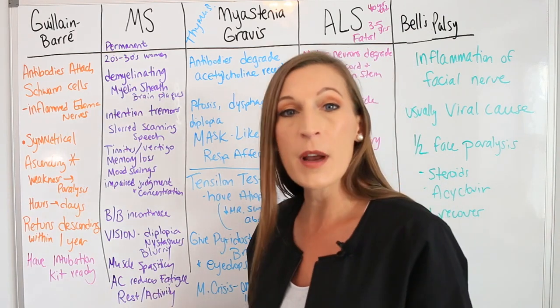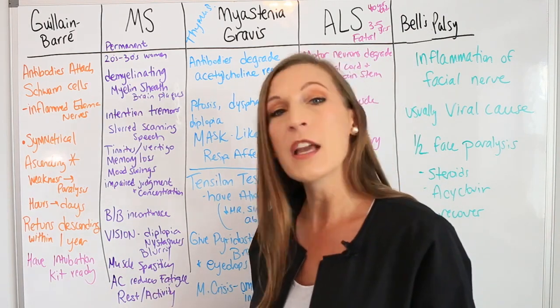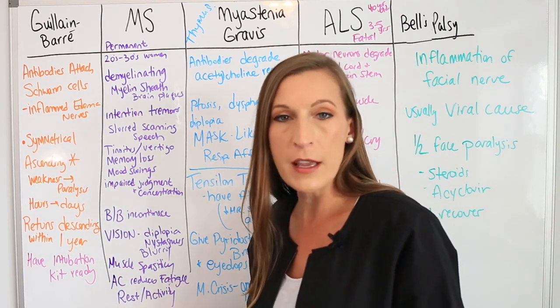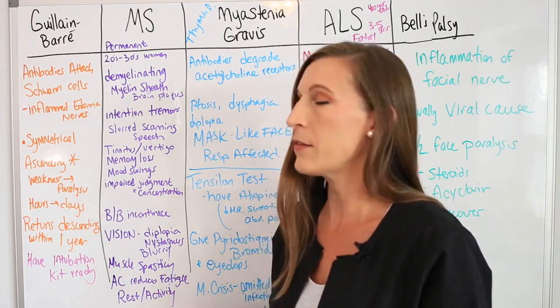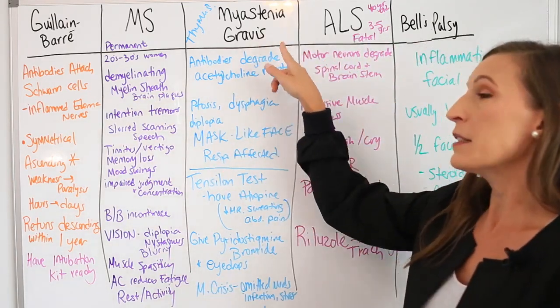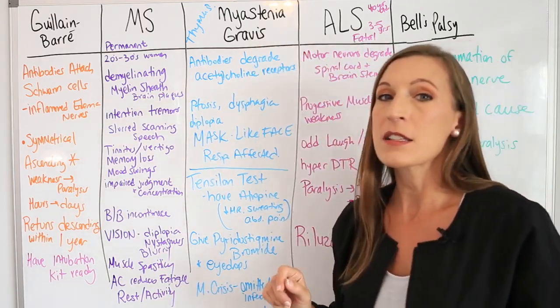MS also causes vision changes: diplopia, blurry vision, nystagmus, and muscle spasticity. Remember that air conditioning helps reduce fatigue. They need to alternate rest with activity, but rest helps regenerate them, so they need more rest than activity.